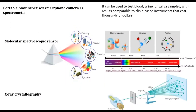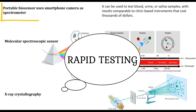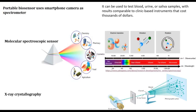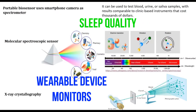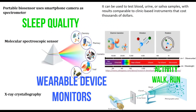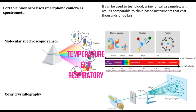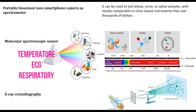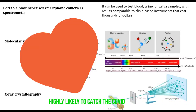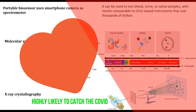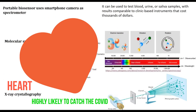For runtime monitoring, one can use portable biosensors which are already in action for rapid testing and detection. Biosensors are coated to smart wearables for measuring quality of sleep, activity detection, temperature, ECG, and respiratory monitoring. They are also used for monitoring heart diseases, hypertension, and diabetes at runtime.